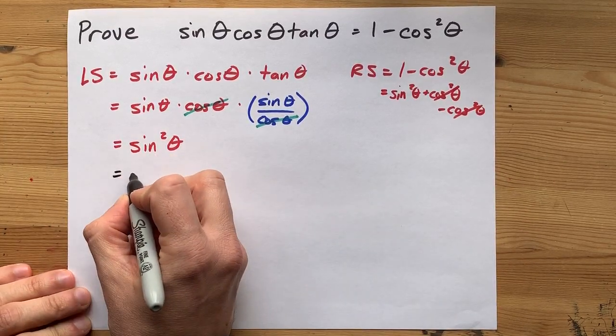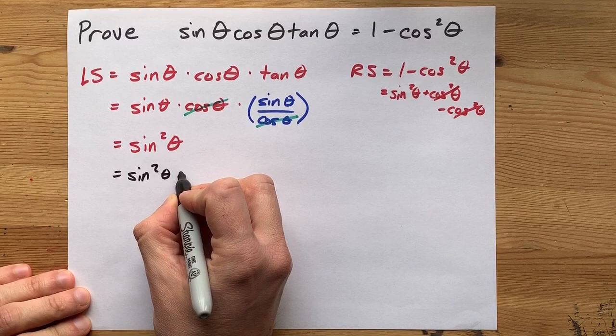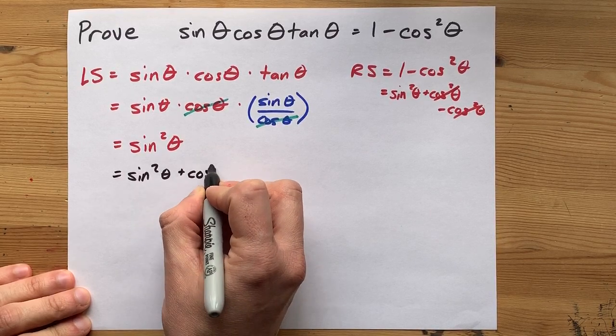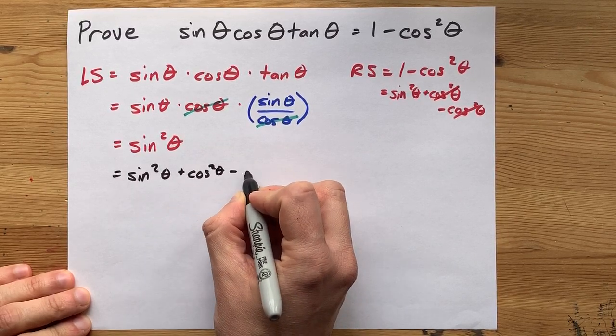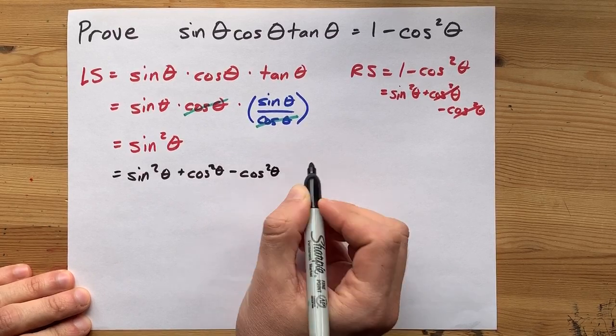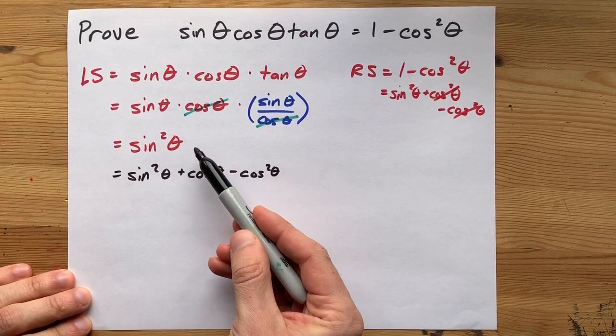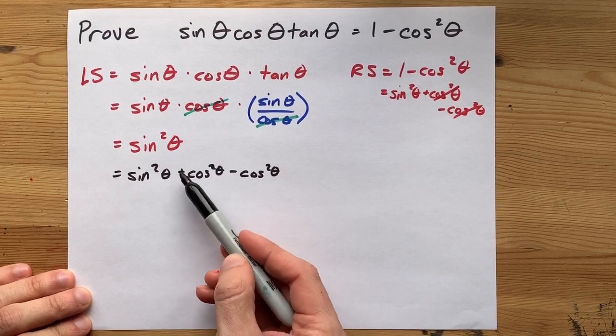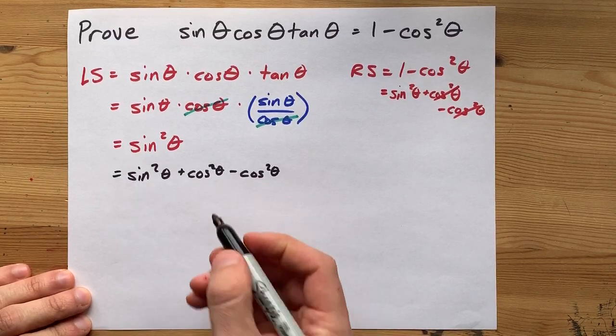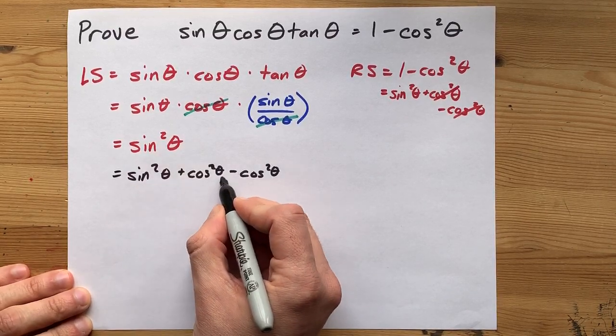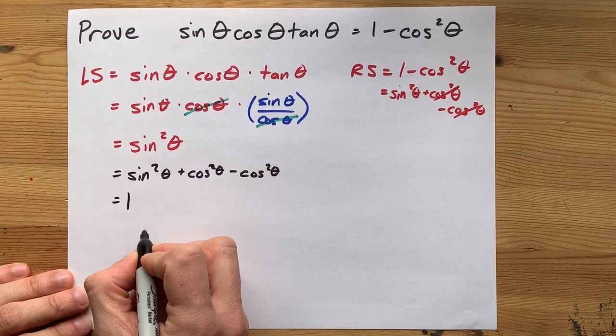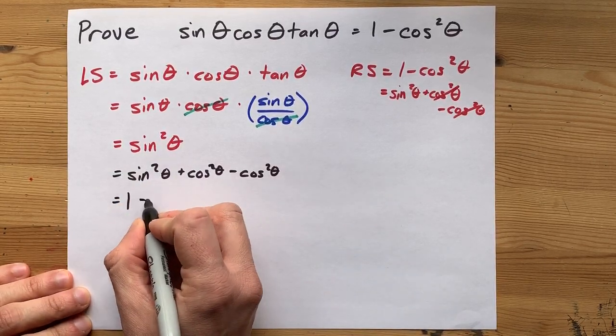I can change this to sine squared plus cos squared minus cos squared. That's obvious that plus 0 became plus something minus itself. Cool. But then you can cleverly replace this with a 1, because sine squared plus cos squared is 1.